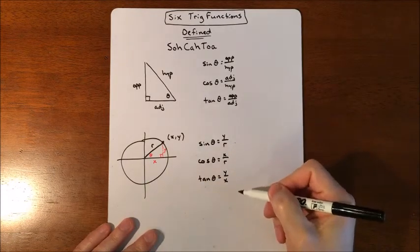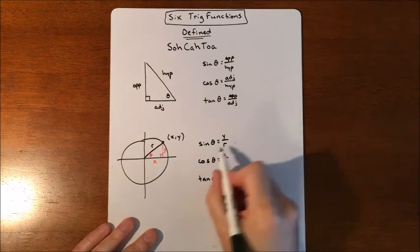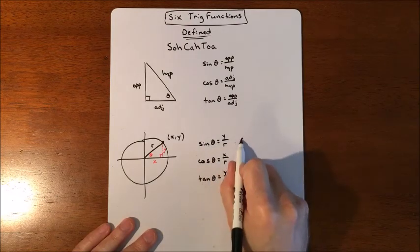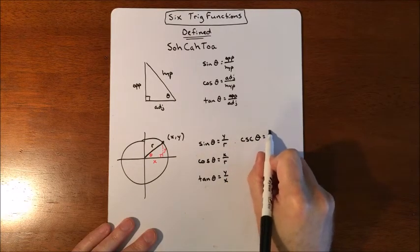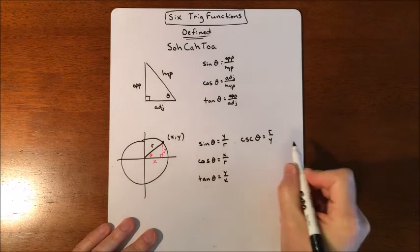So those are three of our six. Then each of these has a reciprocal. Sine's reciprocal is known as cosecant, which is abbreviated like that. And it's just the reciprocal. So it's r over y.